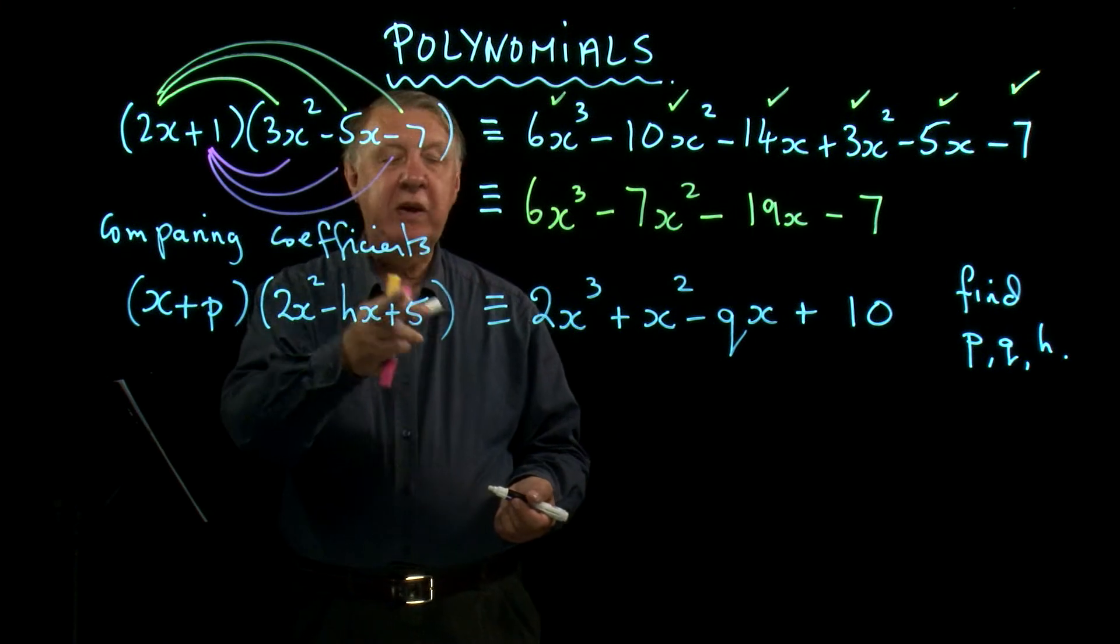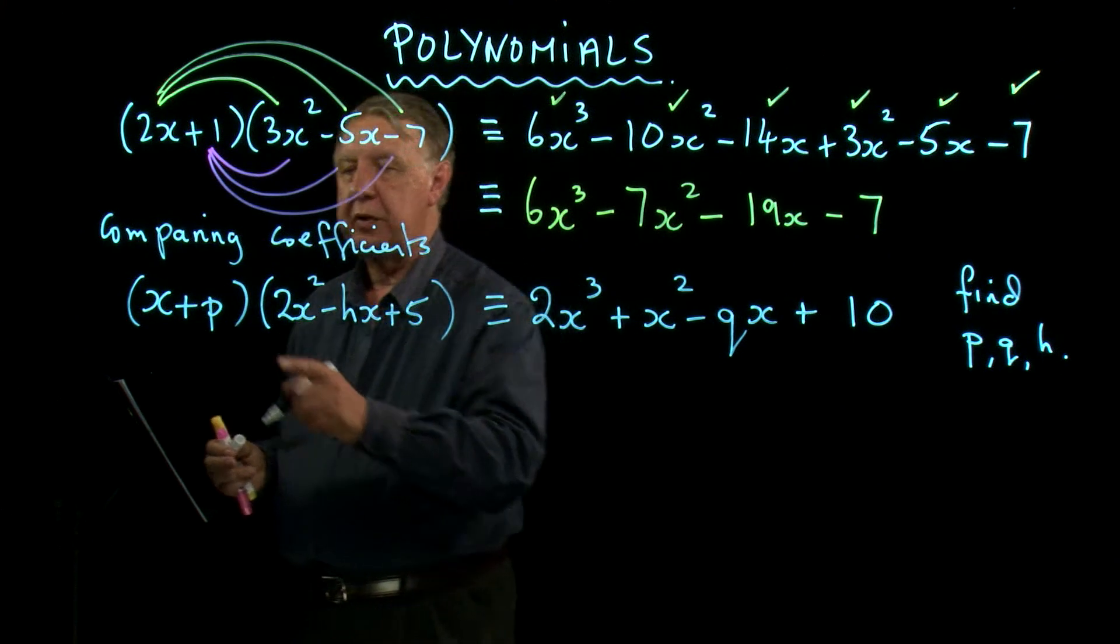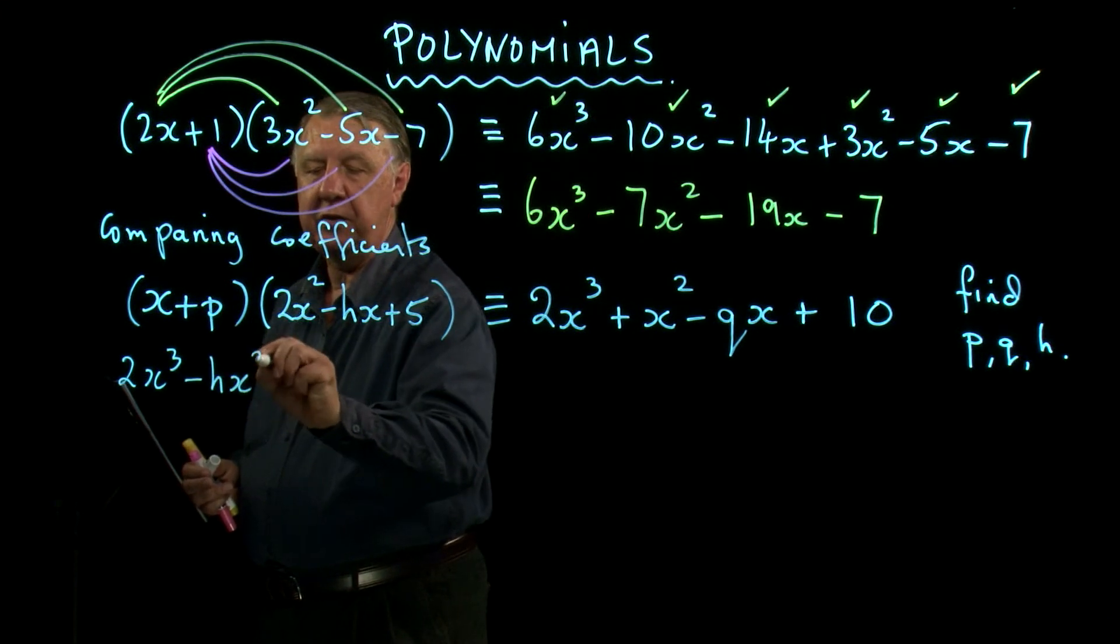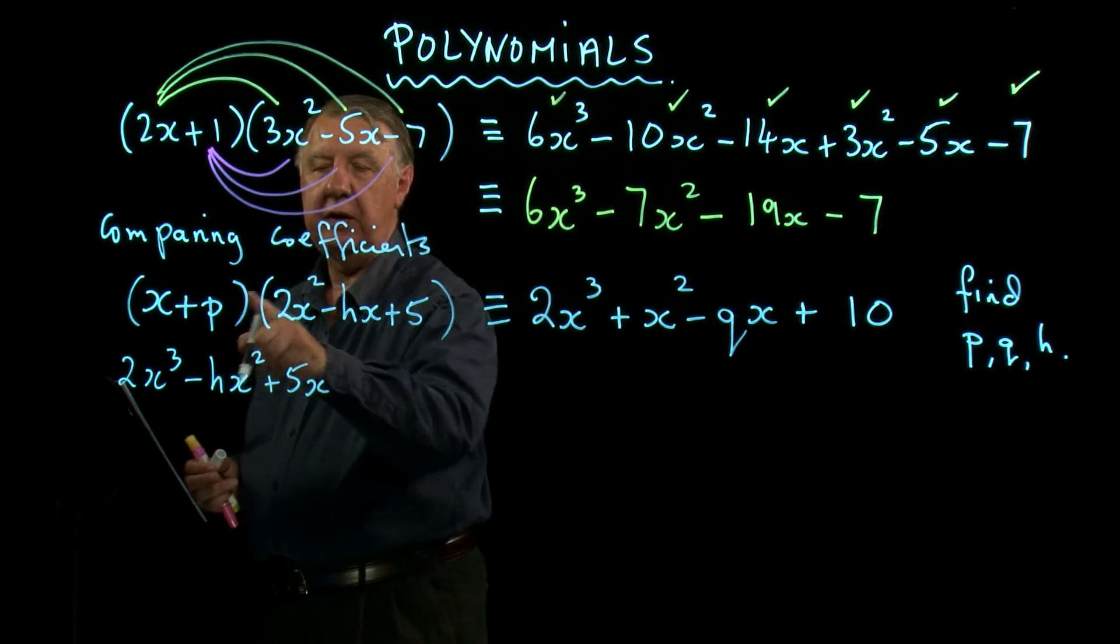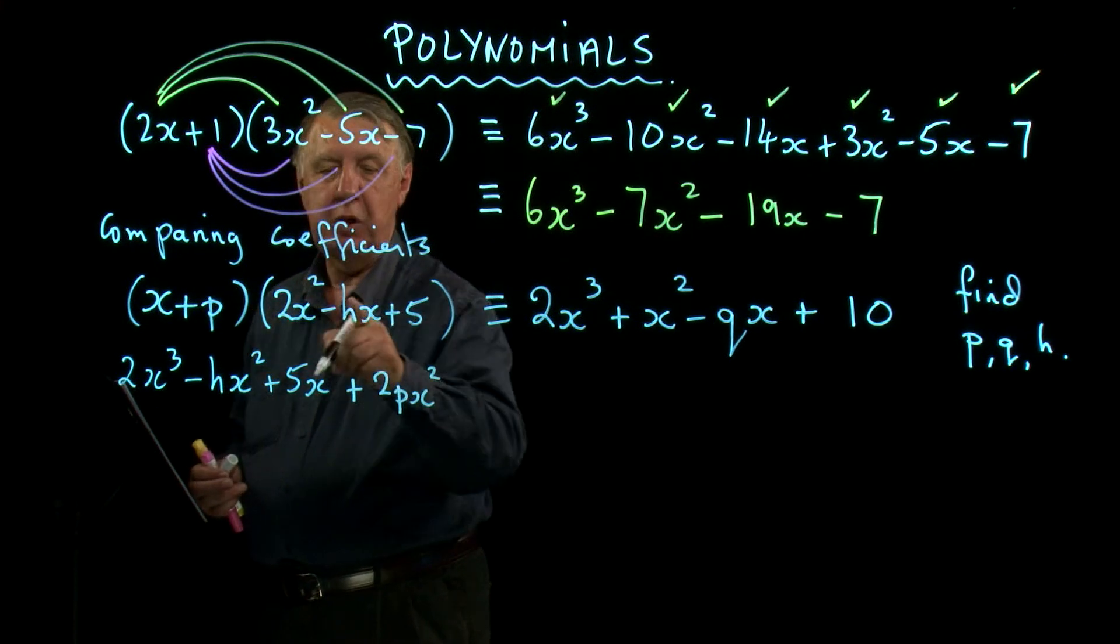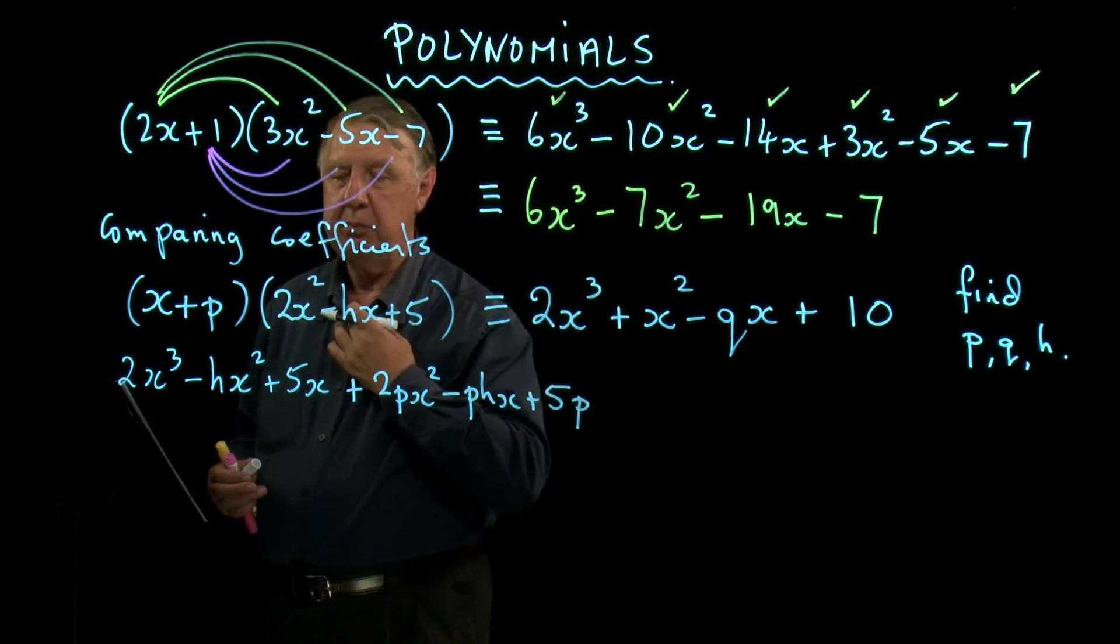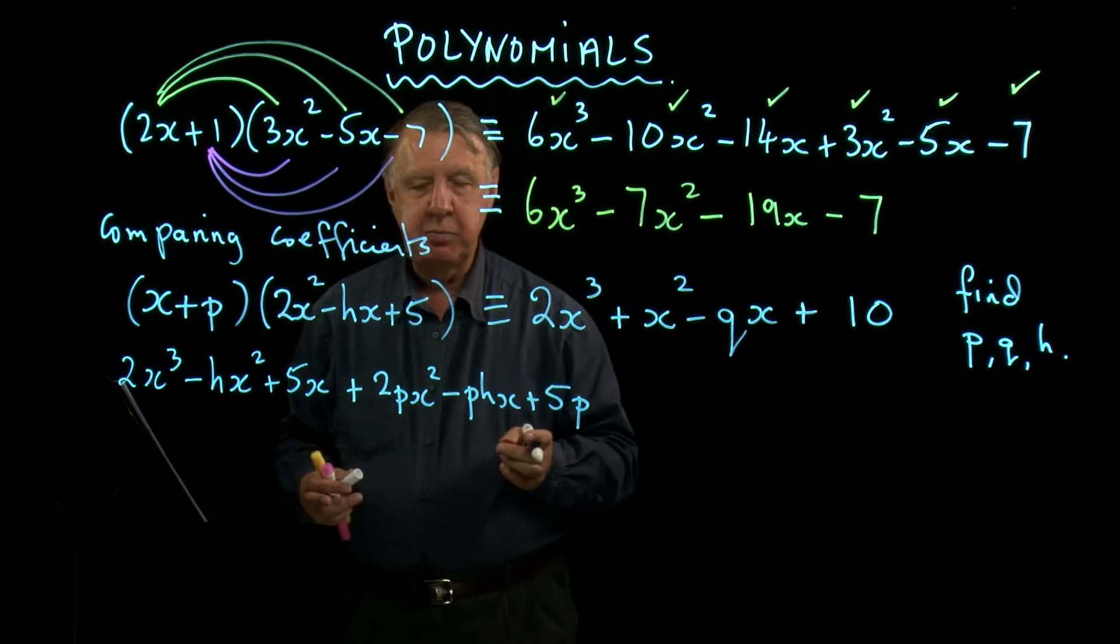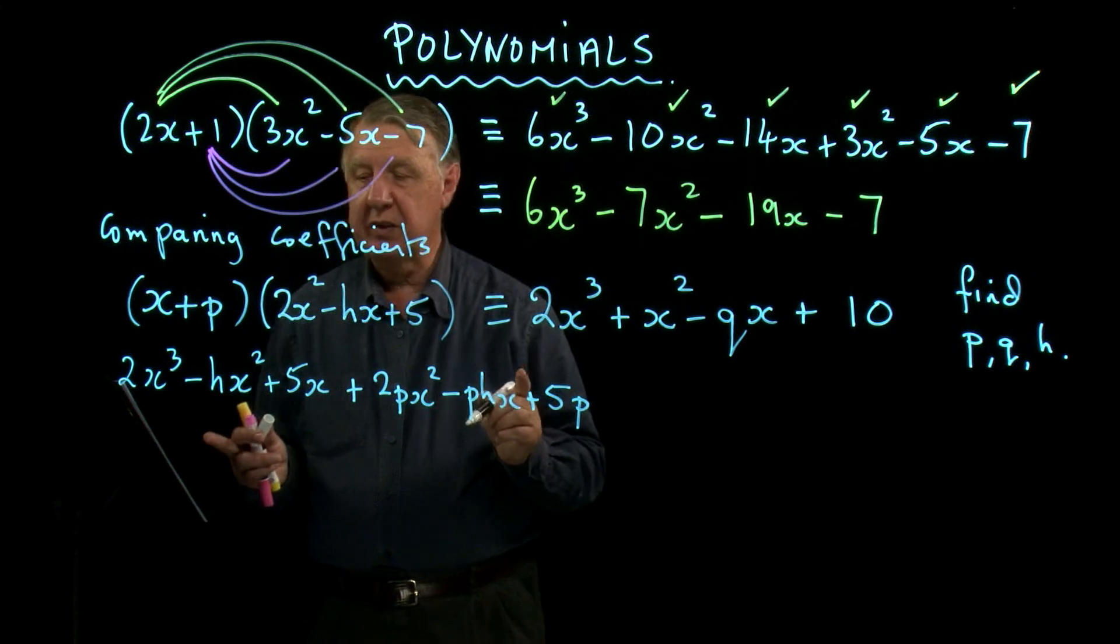Now to be on the safe side, I would multiply that out. So I would have 2x³ - hx² + 5x, then I'd have +2px² - phx + 5p. Now this is where people get a little bit of a muddle. I haven't done any of this grouping yet, this ticking. I'm going to do that because I need to do that.